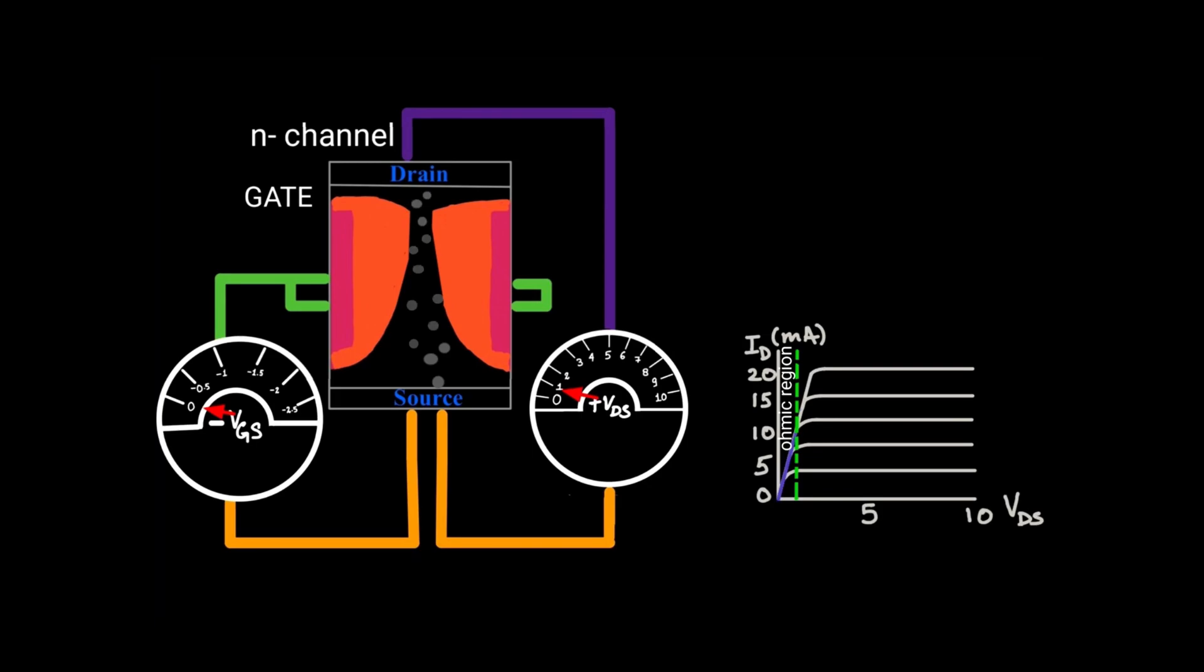When VGS is 0 and VDS is some positive value, you can see the electrons are moving from source to drain, constituting the current. Look at this graph, you can see the blue region showing that current is flowing linearly with respect to the voltage. This corresponds to your ohmic region.